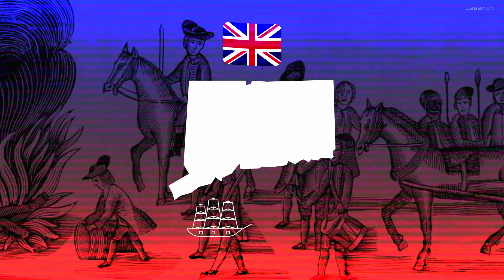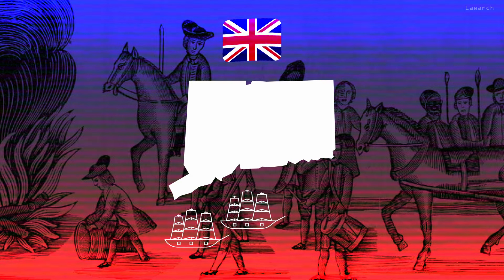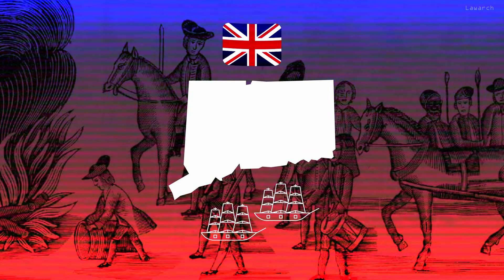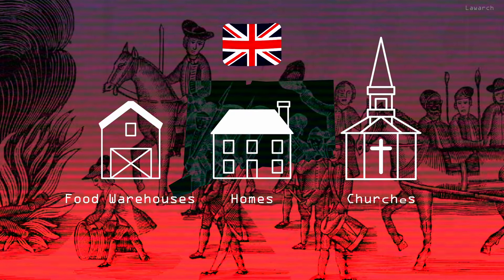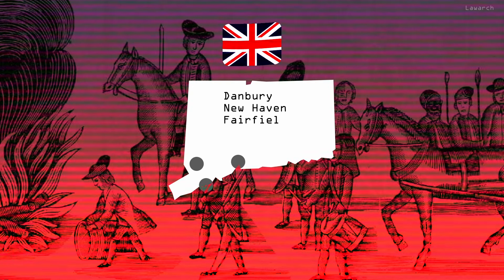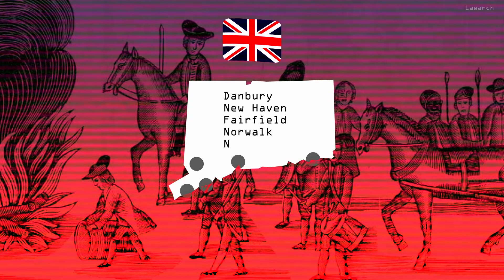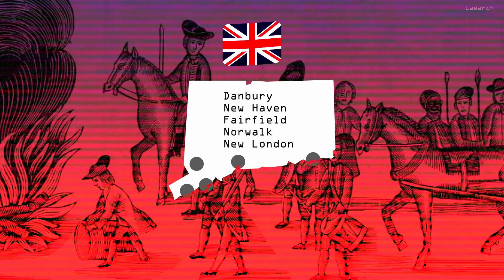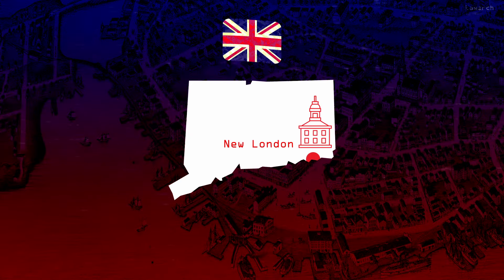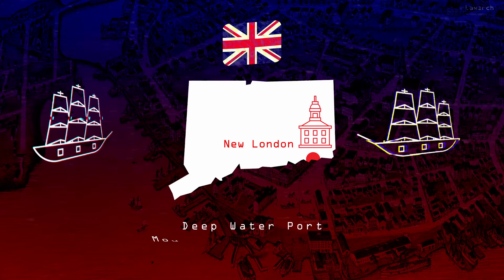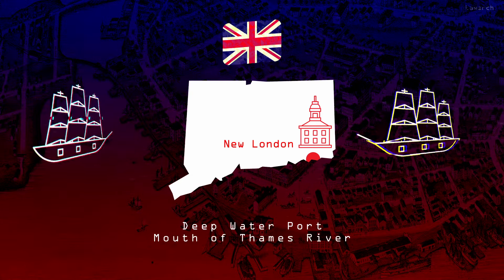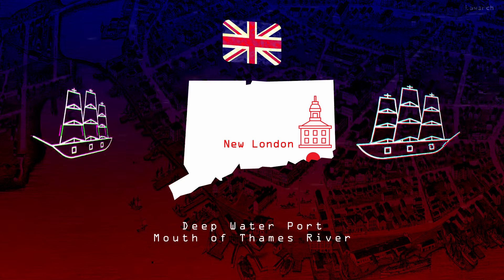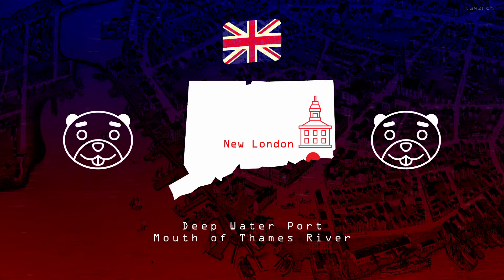During the American Revolution, the British Army initiated a series of raids along the Connecticut coast, setting fire to thousands of buildings, including many food warehouses, homes, and churches, in several towns across the state, including Danbury, New Haven, Fairfield, Norwalk, and most notably New London in 1781. New London is a mid-sized New England town, but its deep water port and its location at the mouth of the Thames River made it an important trade city during the colonial period, with much of New England's early mercantile history being built on shipping beaver pelts back to England.